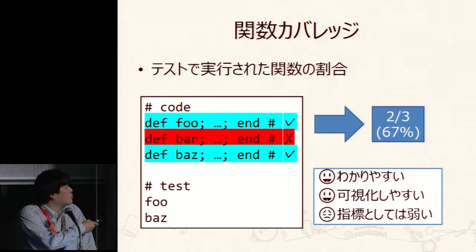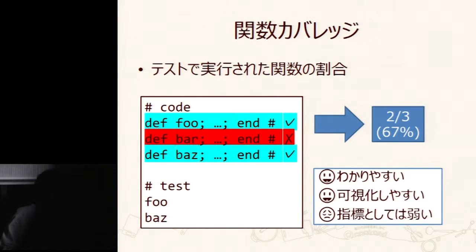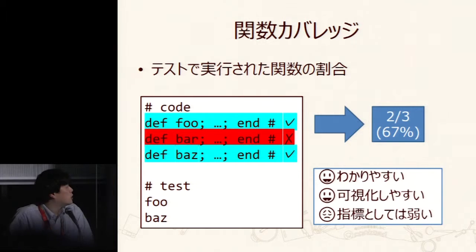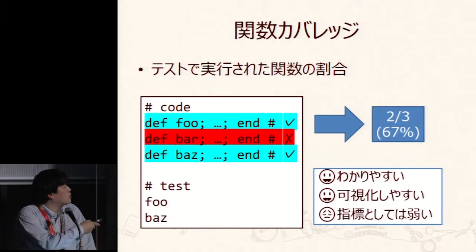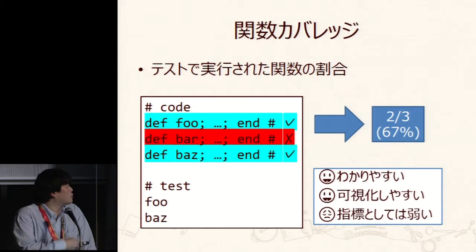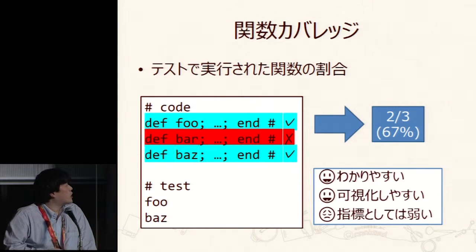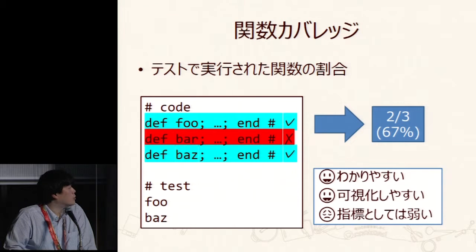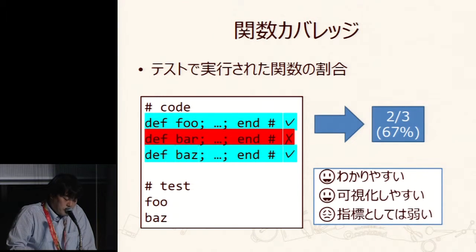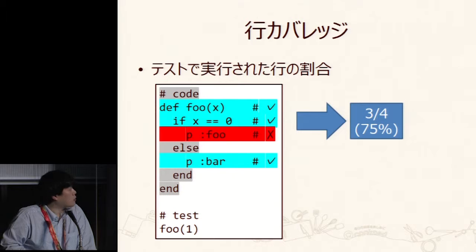But still there's a weakness as an indicator. If there are other statements within the function lines, those would not be fully covered by functional coverage alone.